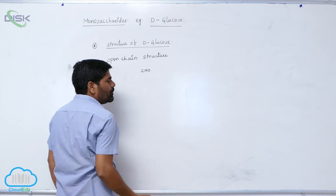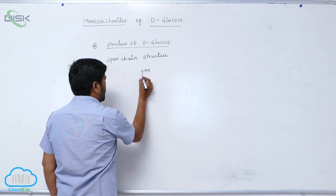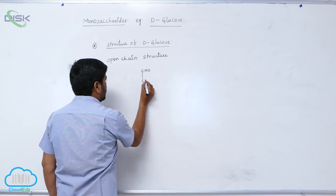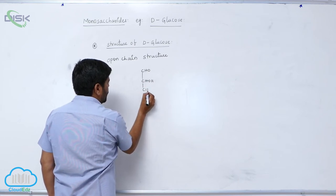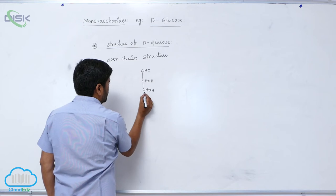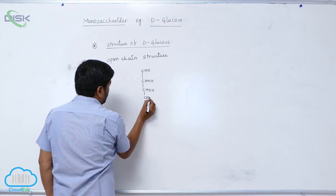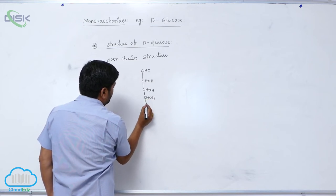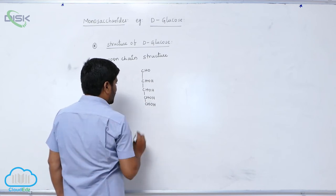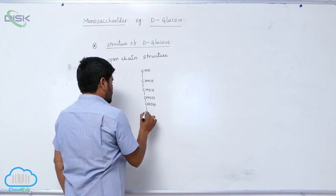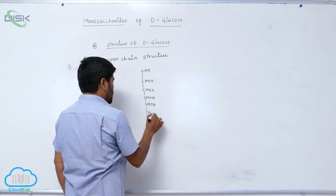an aldehyde group. Then how many OH groups? CHOH, CHOH - four secondary alcoholic linkages. The last linkage is compulsory, which one?